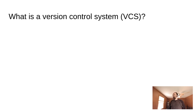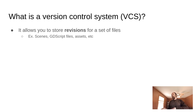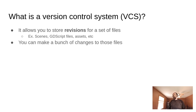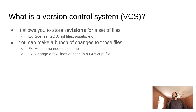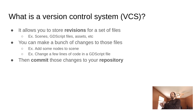So what is a version control system? At the highest level, it's a tool that allows you to store revisions of a set of files — in this case, your scenes, your GDScript files, your assets. It allows you to make some changes to those files — for example, adding some nodes to a scene or changing a few lines of code in a GDScript file. Then you commit those changes to your repository: you make a bunch of changes, initiate a commit command, which takes all of those changes, bundles them up, and pushes them to your repository.